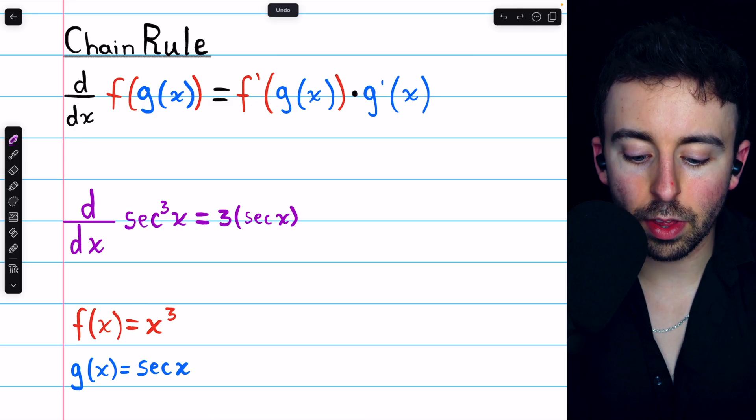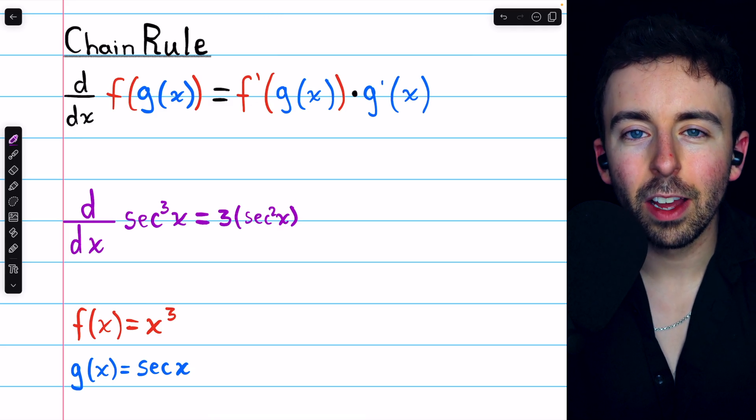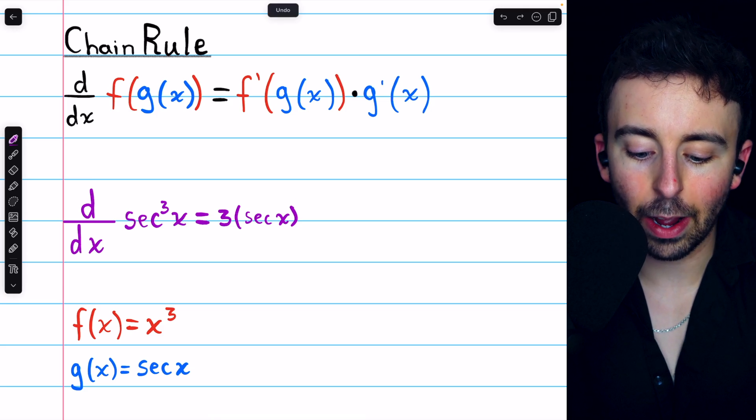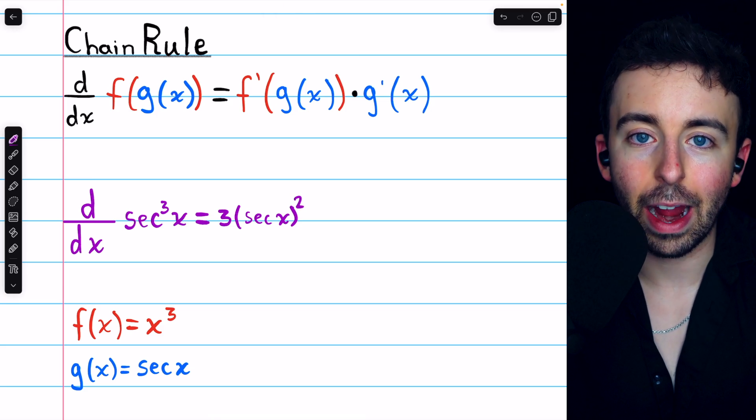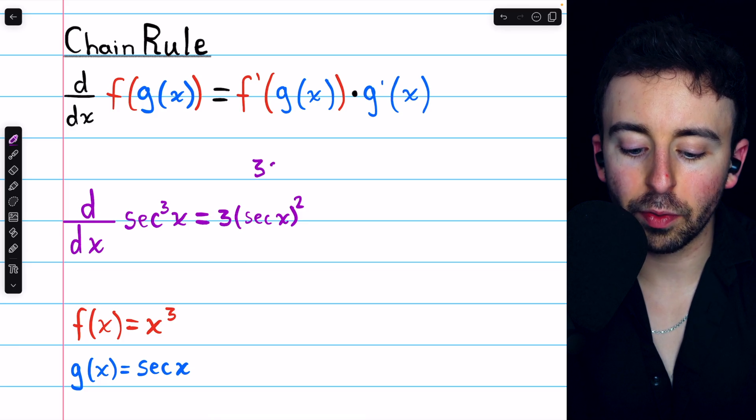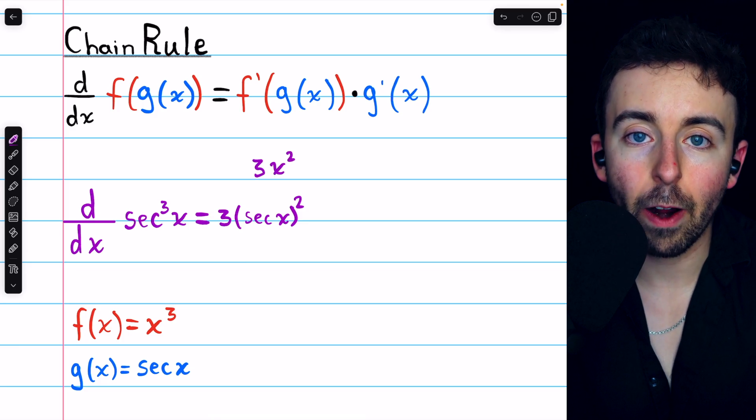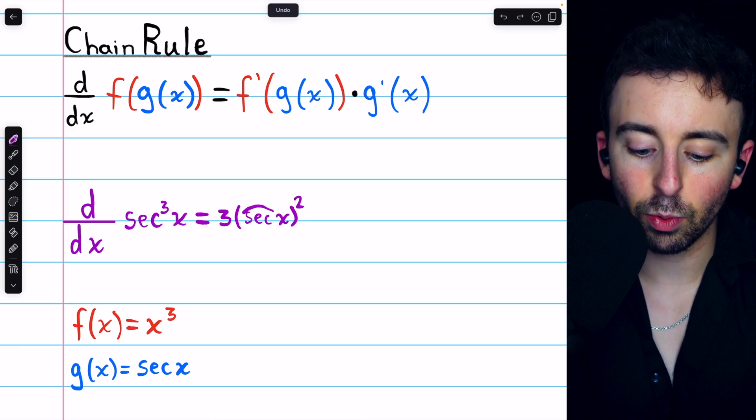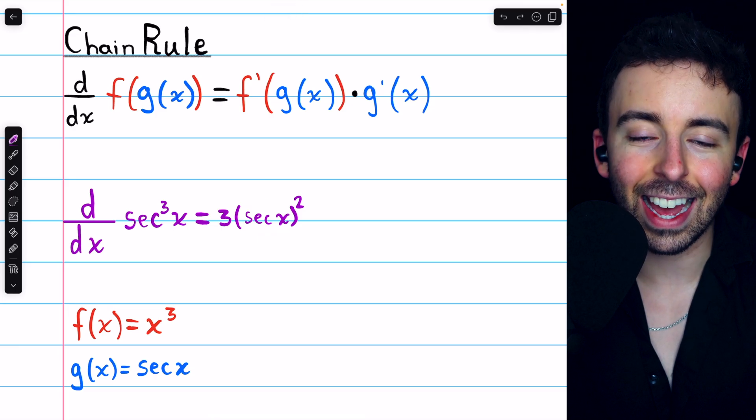You could also put the 2 there, secant squared of x, but I think it makes it a little more clear how this is just the power rule when we put the 2 there. So this looks just like the derivative of x cubed, it would be 3x squared, except in this case, instead of x, we have that inside function secant x.